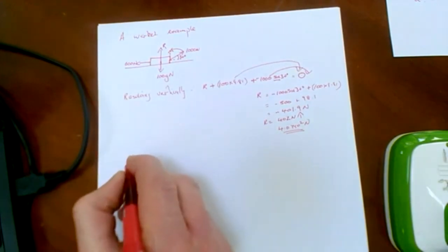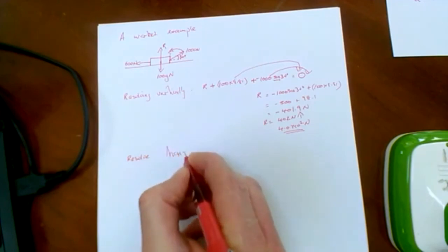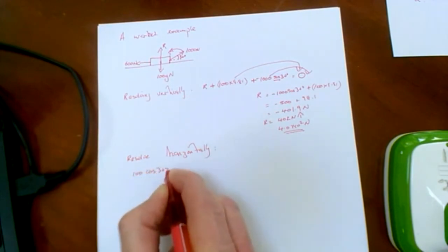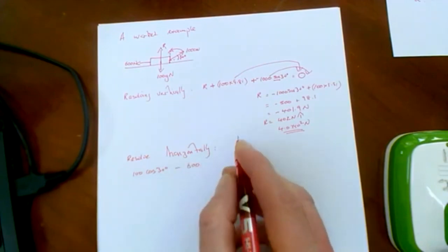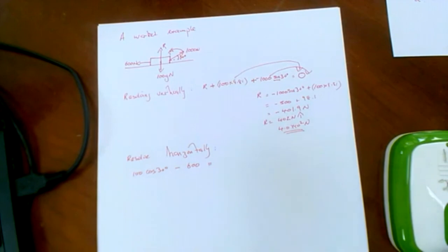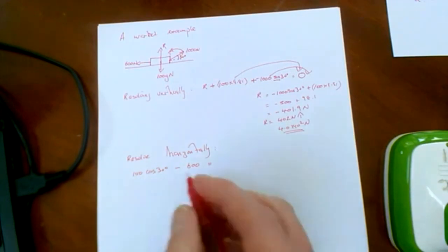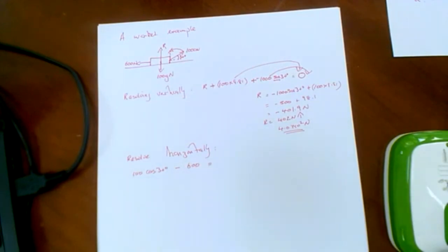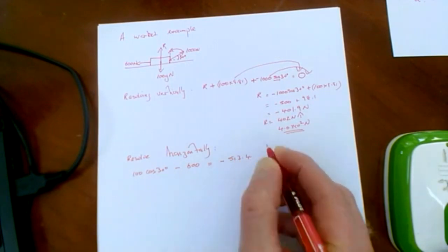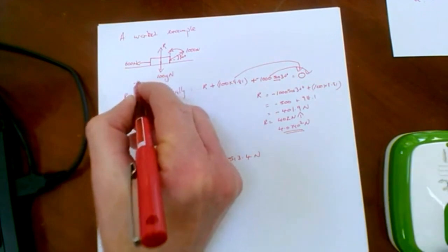If we then resolve horizontally, we have 1000 cos 30 degrees minus 600 is our resultant force horizontally. Unless of course 1000 cos 30 ended up being 600, which it won't. The cos of 30 of course is root 3 over 2. So we have minus 513.4 Newtons, so we have 513.4 Newtons to the left.